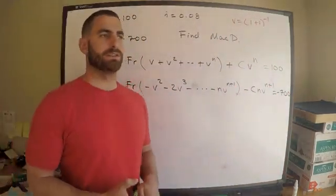How does this relate to the derivative? If I take the derivative and multiply it by negative (1+i), hopefully you can see that the numerator of the duration formula equals negative (1+i) times the derivative. So the Macaulay duration equals negative (1+i) times the derivative, divided by the price.